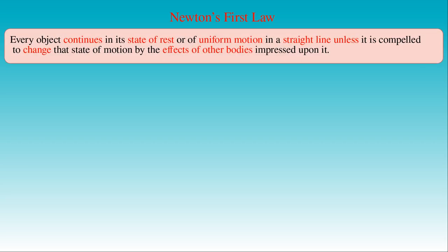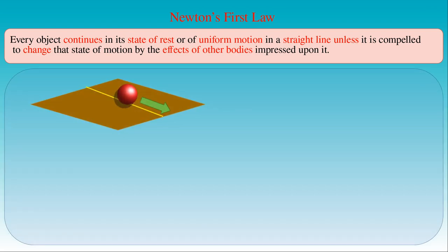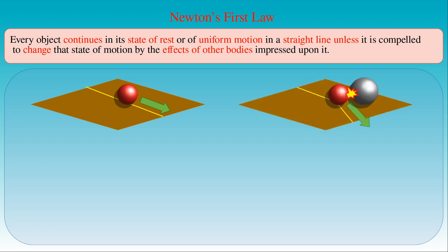Every body continues in its state of rest or of uniform motion in a straight line, unless it is compelled to change that state of motion by the effects of other bodies impressed upon it. According to the first law of motion, if a ball is rolling on the floor and the effect due to friction is negligible, then it travels along a straight line at a constant speed. If the ball collides elastically with another ball, then the other ball has an effect on its motion and the moving ball changes the direction of its motion.